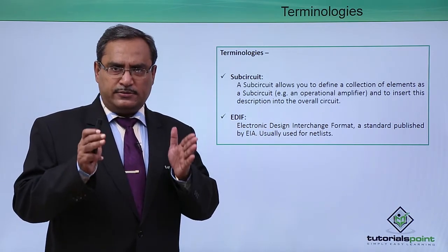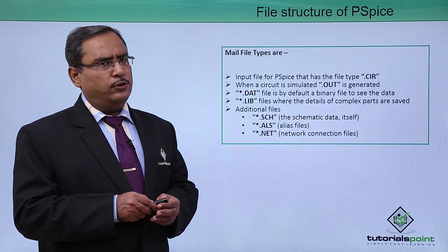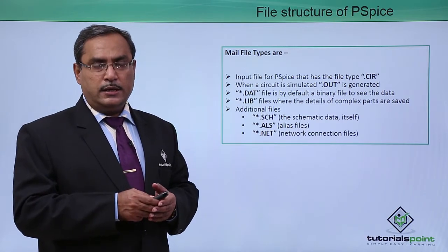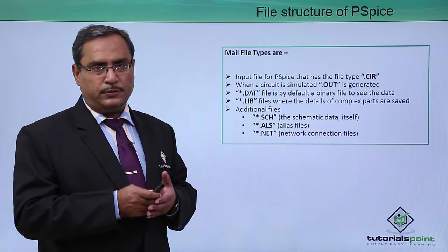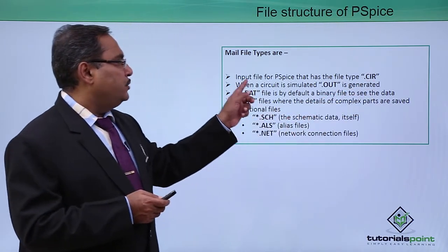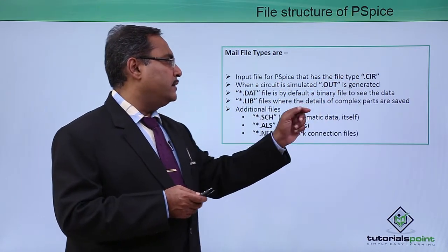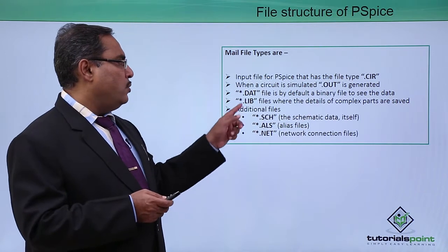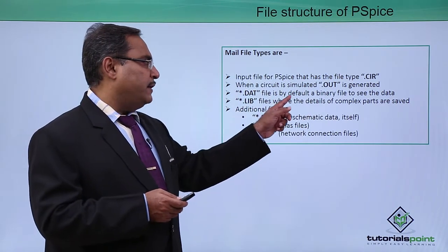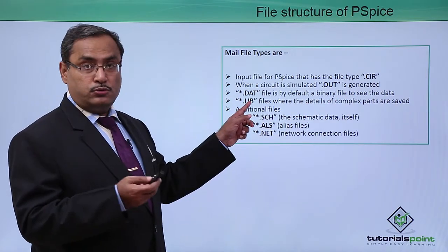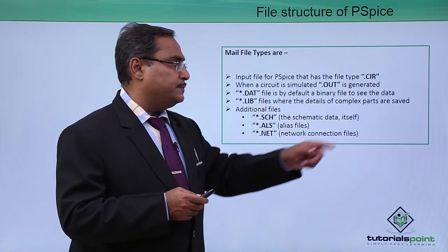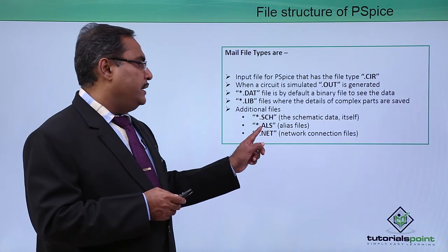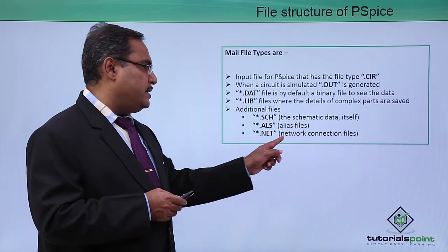Whenever you go for a PSPICE related project, you will find many different files in your project folder. Different files have different purposes, and most of the files are text files — you can open them in Notepad or any other text editor and read them; all of them are meaningful and purposeful. Some of the extensions are: .cir — the input file for PSPICE; .out — the output file generated when a circuit is simulated; .dat — a binary file to see the data; and .lib — library files where the details of complex parts are saved. We also have .sch for schematic data, .als for alias files, and .net for network connection files.